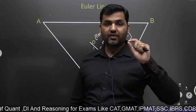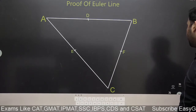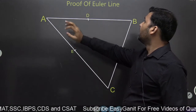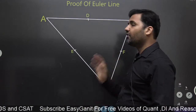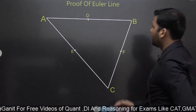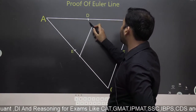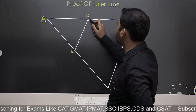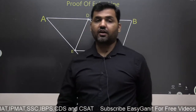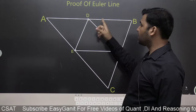Let's say this is triangle ABC. Let's say D, E, and F are the midpoints of the sides of triangle ABC. If I join these three midpoints, I'll get another triangle DEF — that triangle is called the medial triangle of ABC. It is called the medial triangle because it is made by joining the midpoints of all three sides of the outer triangle, and by the midpoint theorem, when you join the midpoints of two sides, that line will be parallel to the third side.